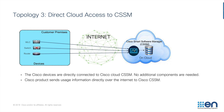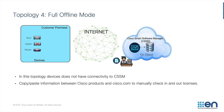No registration is needed for Topology 3, but trust has to be established using a token ID. Topology 4 is where the 9800 has a complete air gap between itself and CSSM. There is no CSLU and the controller is not connected to any external entity. Usage information is synced manually by exporting and importing usage files.